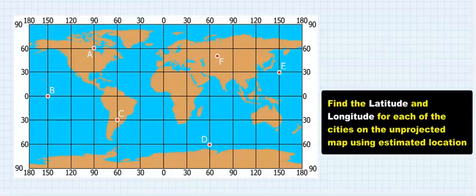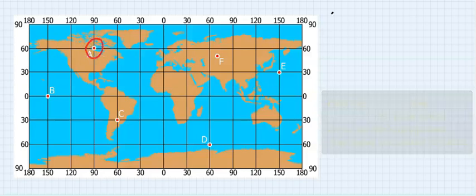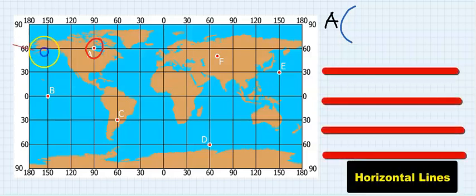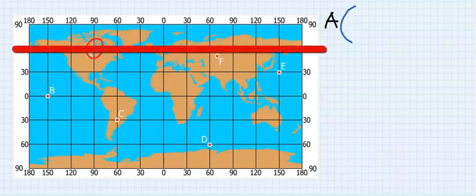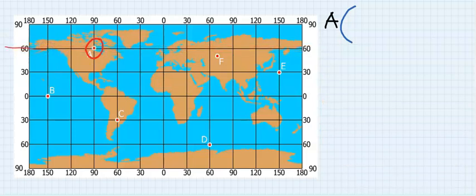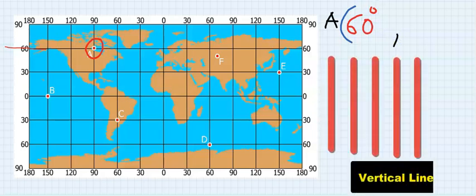In this example, let's find the longitude and latitude of point A. First step, you write A and you open a bracket. First, you read the latitude line. The latitude lines are the horizontal lines, and this horizontal line falls at 60, hence you write 60 degrees.